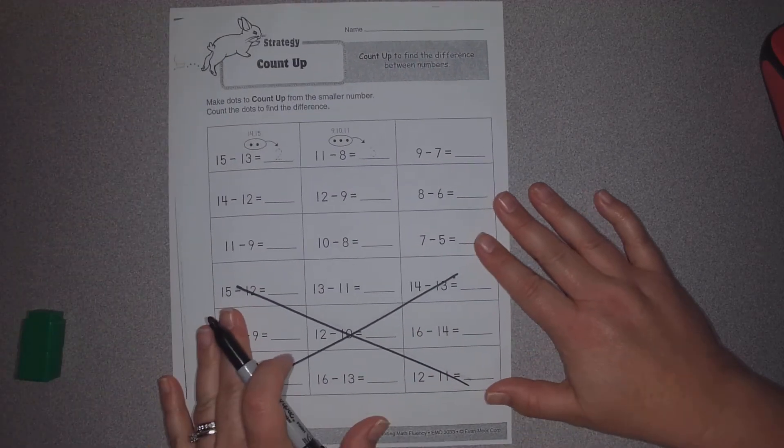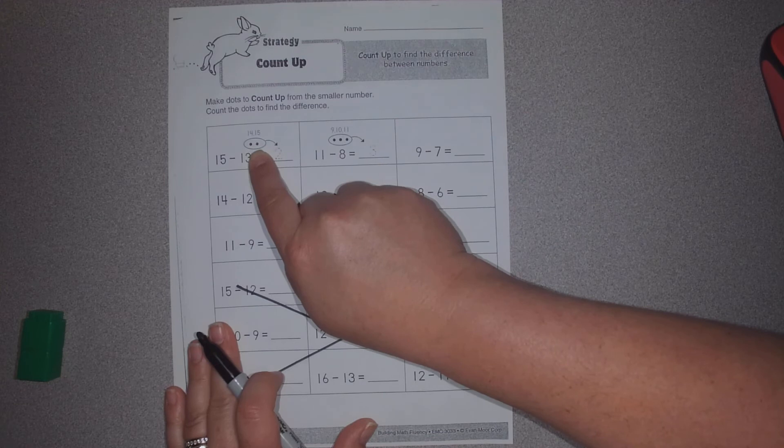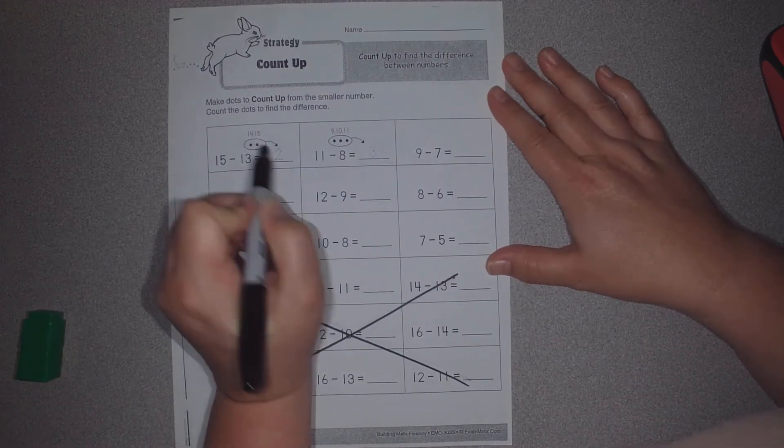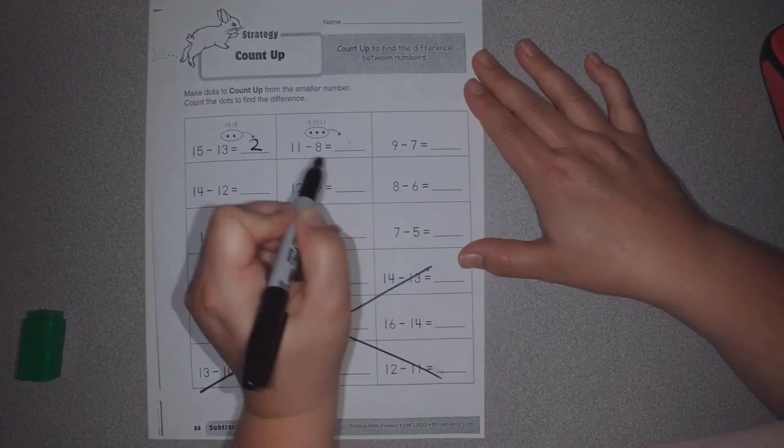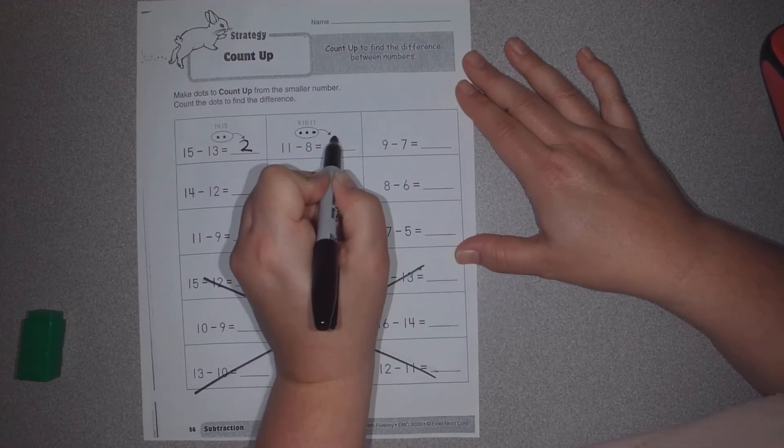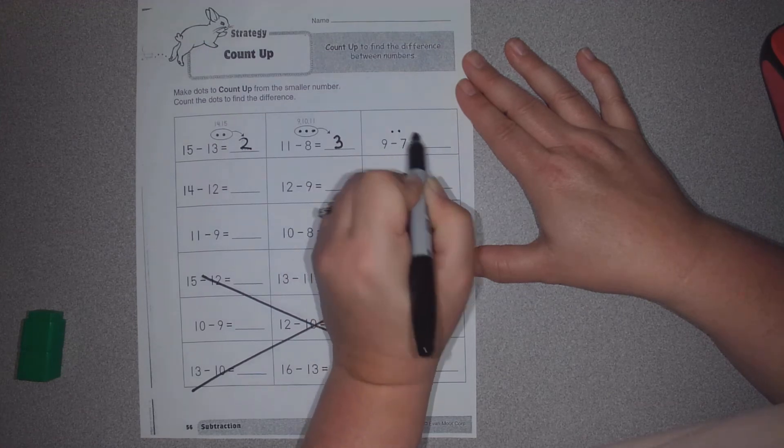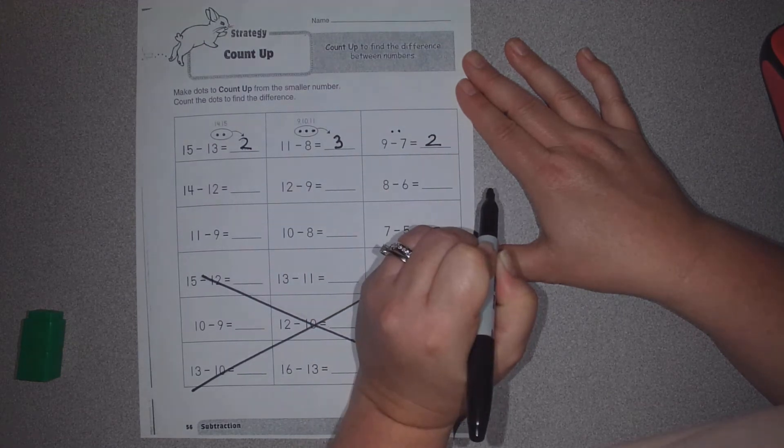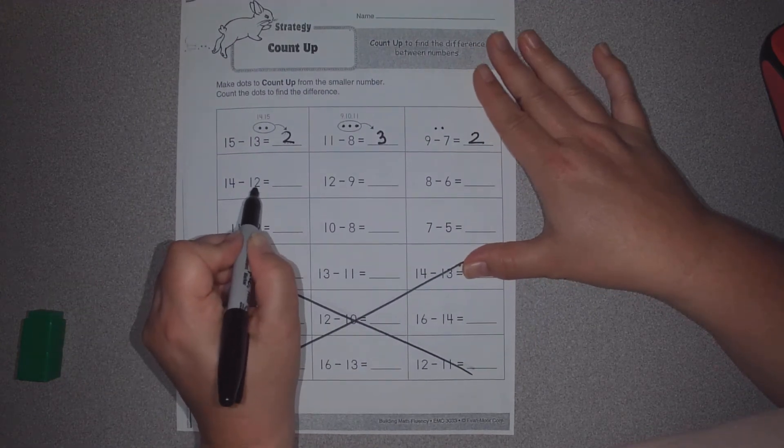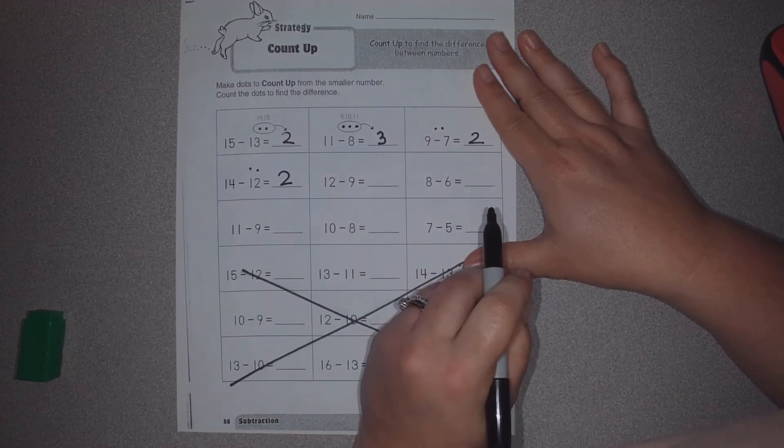Alrighty. This time you had a lot of pages to do. Same thing with this one. This time instead of tally marks, we're making dots. So we hold the 13 and we say 14, 15. That was 2 jumps. Hold the 8. 9, 10, 11. That was 3 jumps. Hold the 7. 8, 9. That was 2 jumps to get to the 9. Hold the 12, the smaller number. And we're trying to get to the 14. Hold the 12, 13, 14. That was 2 jumps.